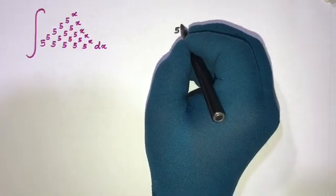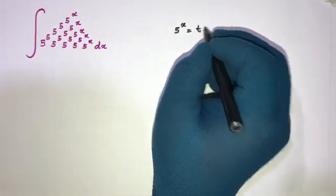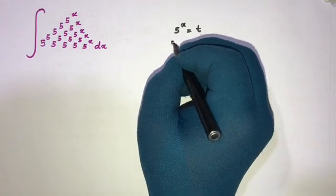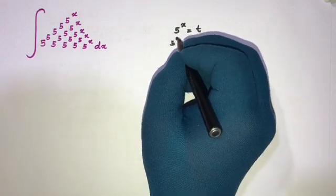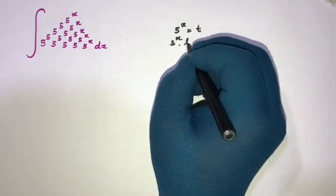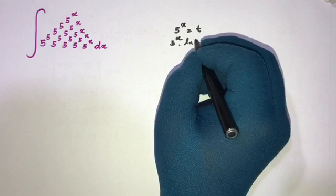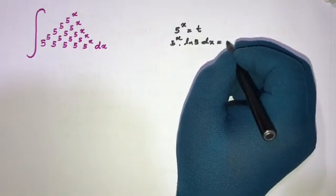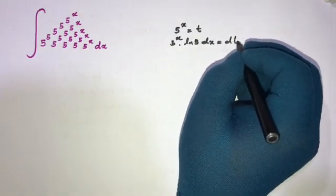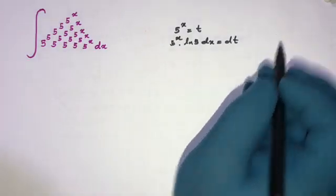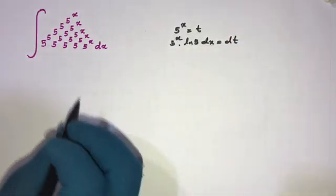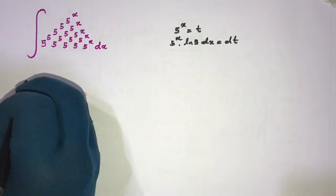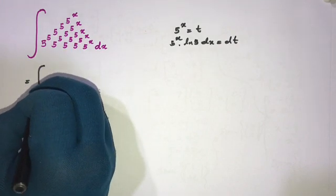For the first substitution, let 5^x equal t. Differentiating, we get 5^x times the natural log of 5, dx equals dt. So dx equals dt over (5^x · ln 5).